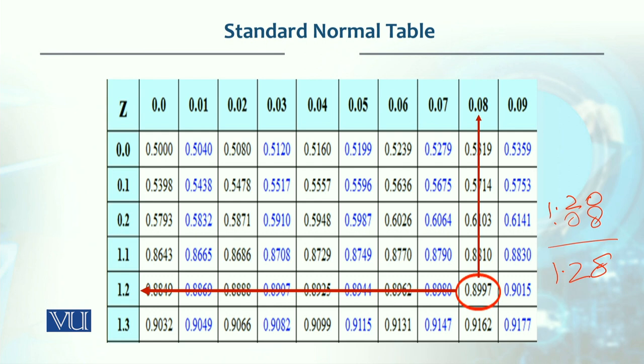To summarize: the leftmost column gives you the Z value's integer and first decimal part, and then you go across to the matching column header for the second decimal. Summing the row value and column header gives the actual Z value.